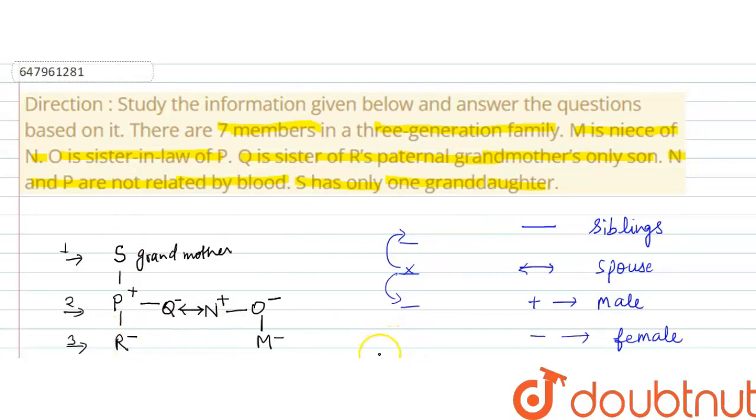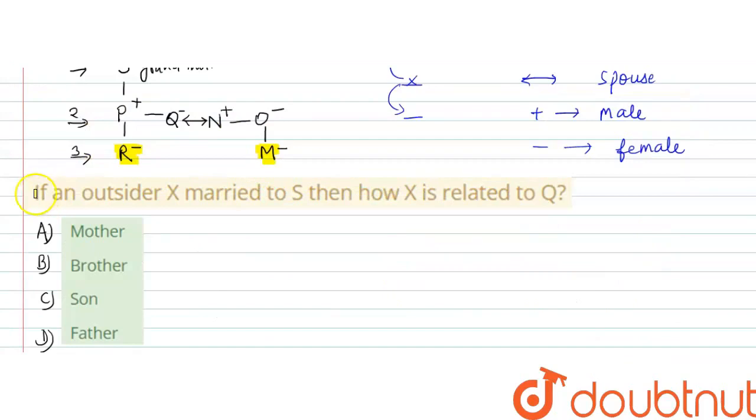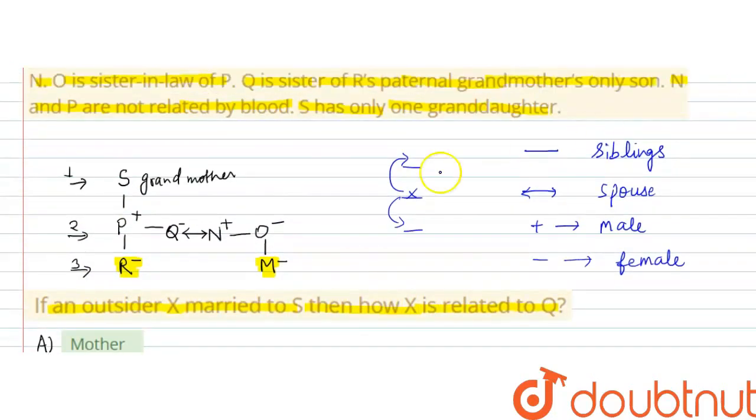Question dekhte hai. Question me puchha gaya hai - if an outsider X married to S, then how is X related to Q? Pehle dekhte hai Q aur S ka relation. S yahan par grandmother hai R ki, to Q ki mother hogi.